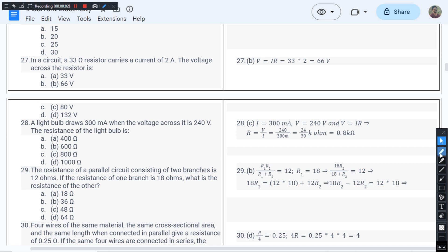This is question number 27 from chapter 1 of RK Rajput's book, and the question goes like this: in a circuit, a 33 ohm resistor carries a current of 2 ampere. So let us draw the fictitious circuit.